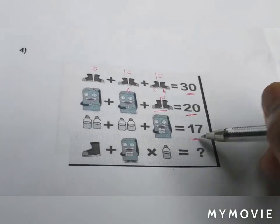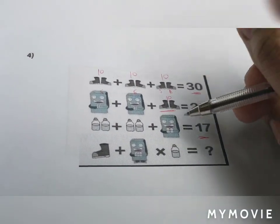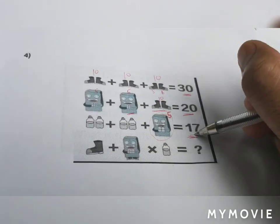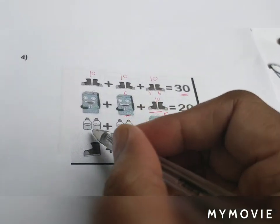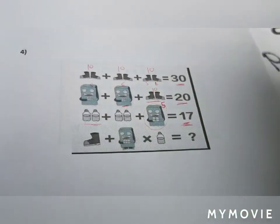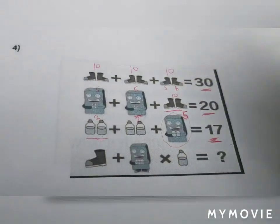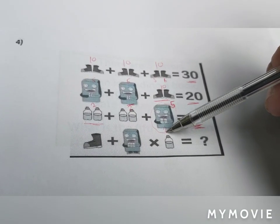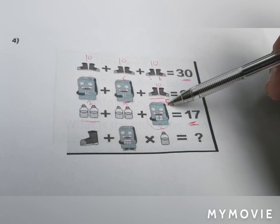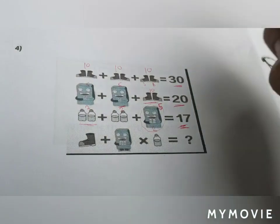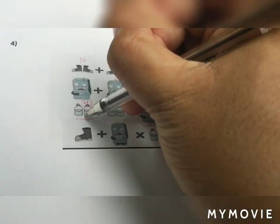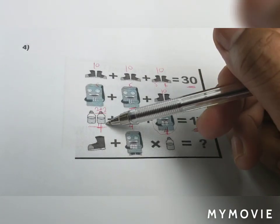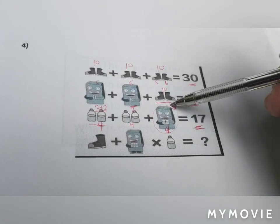For the third equation, the result is 17. The shoe is still equal to five. The figure is holding two bottles, and each bottle is equivalent to two, so two plus two plus two equals six. Six plus five equals 11 — wait, the value of each bottle is two. So four plus four is eight, plus four is 12, plus five is 17. We get 17.